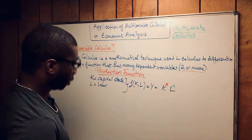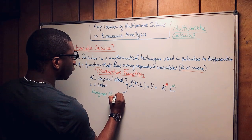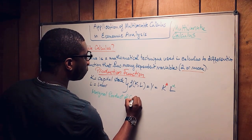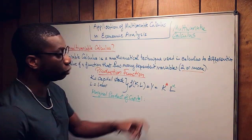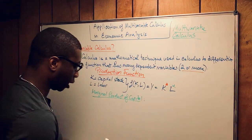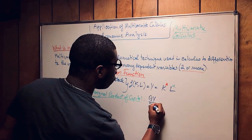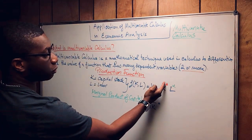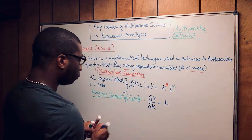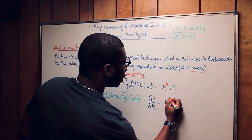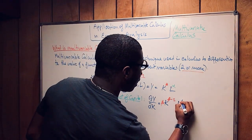Let's say you want to calculate the marginal product of capital. You differentiate with respect to K. So partial of Y over partial of K equals beta times K to the power beta minus one, and L to the alpha stays the same. That's how you get the value of the marginal product of capital.